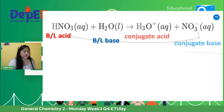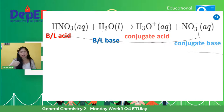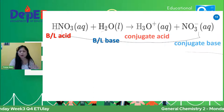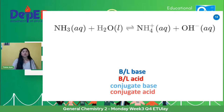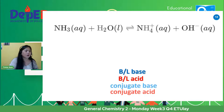So that is for equation number one. For a number two equation — NH3 plus H2O will have a reversible reaction with NH4 and OH or hydroxide. What is our Bronsted-Lowry acid? Alin dyan ang magbibigay ng proton?